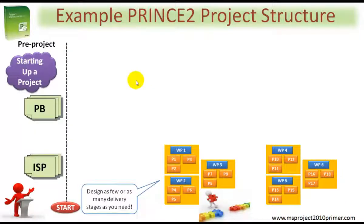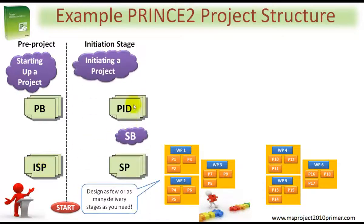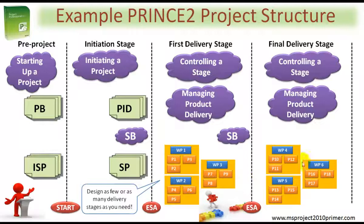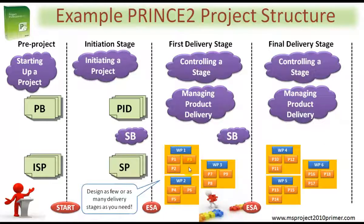Here's an example of a typical PRINCE2 project. You have pre-projects with the project brief and the initiation stage plan, the initiation stage itself, the creation of the PID, and the plan for the first delivery stage. As you're into each delivery stage, you need to control a stage and manage product delivery, which is where your work packages will come from. We need to use the managing a stage boundary process before entering into the final delivery stage. I've got all of these aspects covered in my Microsoft Project 2010 templates. You can mix and match, designing as few or as many delivery stages as you need. At the end of the last stage, you'll need to close the project down in a controlled manner, and I've included the closing a project process as one of the many modules.